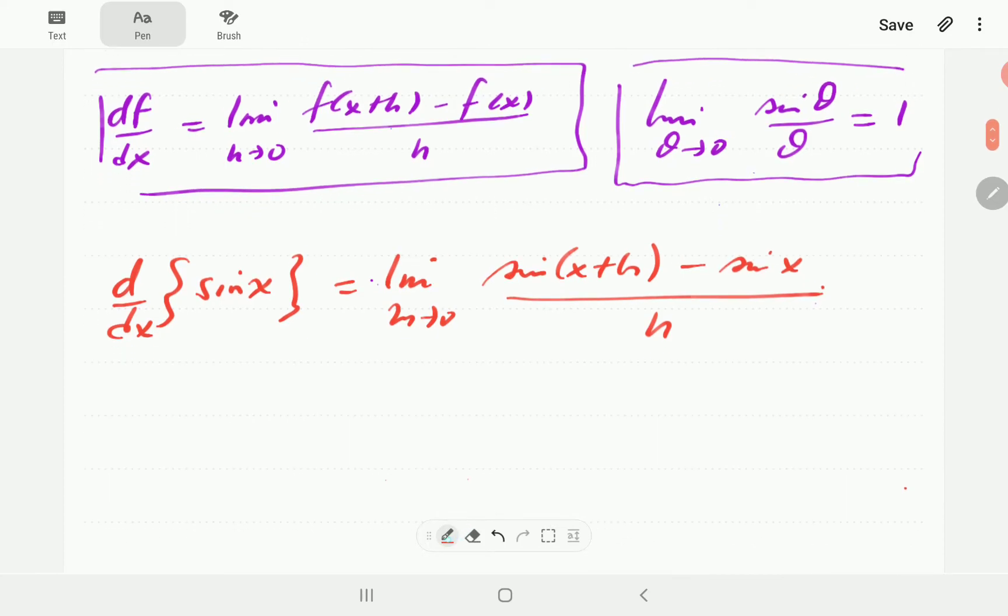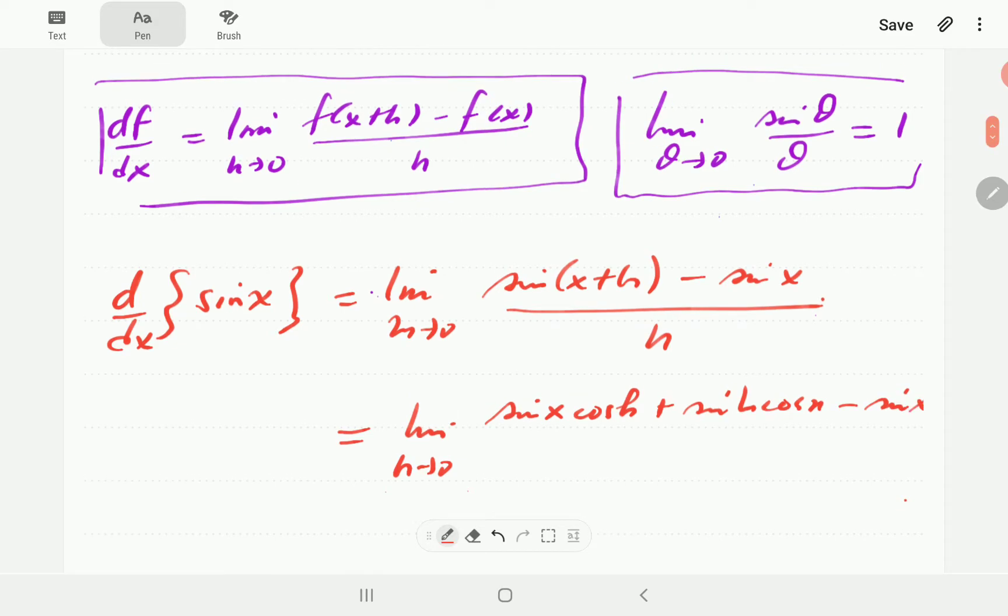Then what we're going to do is we are going to expand sine of x plus h using the addition formula for sine. So that means we are going to have sine x cos h plus sine h cos x and then minus that sine x that we had already.